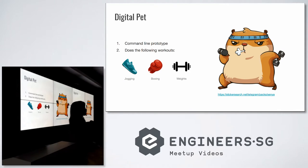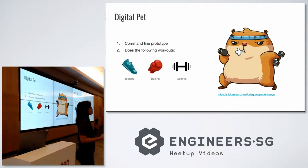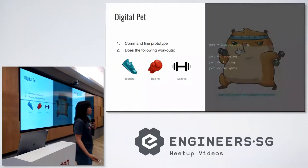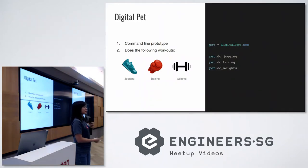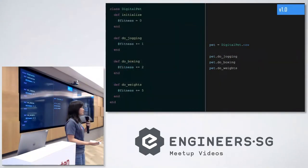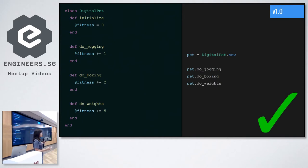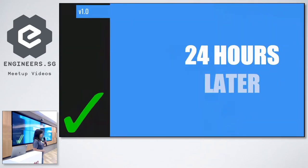Suppose we're all part of an engineering team and one day product asks us to develop a digital pad. This digital pad is a health nut — it likes working out, and when it does, its fitness increases. As engineers, we take those requirements and convert them to code. The digital pad has three public methods: do jogging, do boxing, and do weights. It doesn't take us long to implement, and we go home happy.